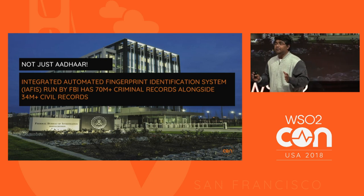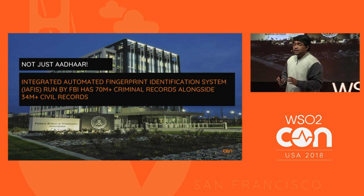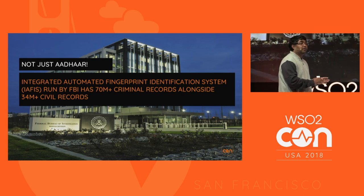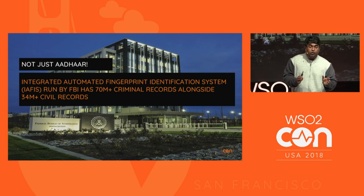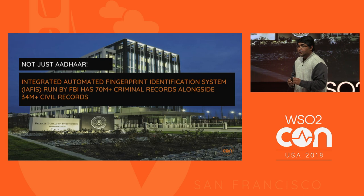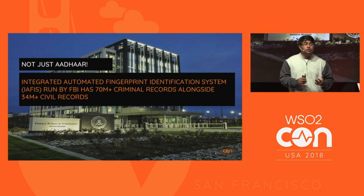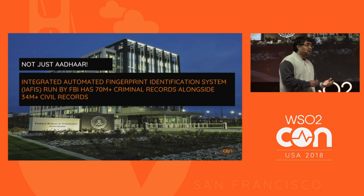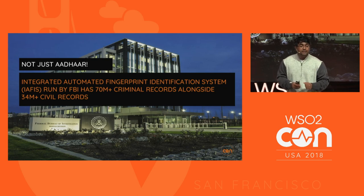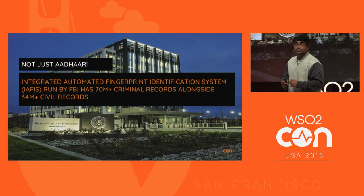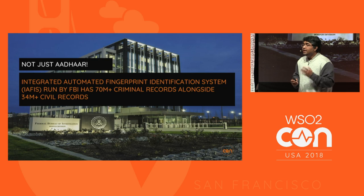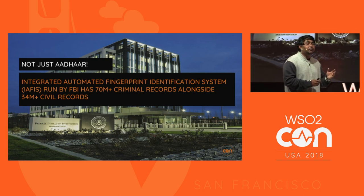Aadhaar is by far the largest digital identity program and the largest repository of biometrics in the world. It's been criticized for being a centralized system under the government, but it's not just Aadhaar. In the USA, the FBI under the IAFIS program collects biometrics including facial images, fingerprints, and physical characteristics like height, weight, eye color, hair color, and even scars and tattoos — with more than 70 million criminal records and 34 million civil records. Many nations are building their own identity repositories for citizens.